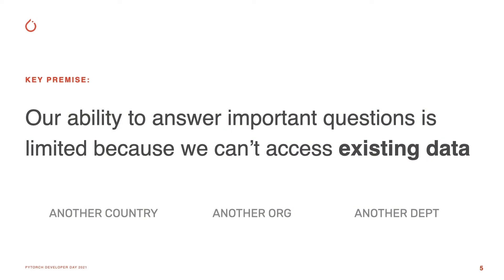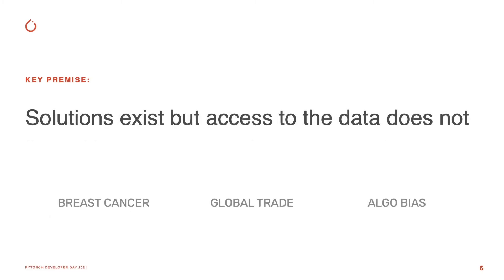The setup for this is really about how our ability in society to answer important questions is limited by the amount of data that we have access to, because that data simply is not at our disposal — it's in another country or another department. This leads us to the core premise of this talk: solutions to really important problems already exist, but we just can't access those solutions because we can't access the trained data and machine learning data we need.